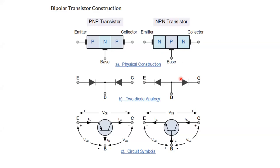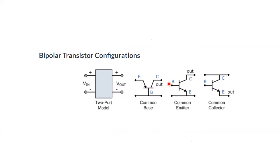Depending on the configuration, we can have different modes of operation, and within each mode there are different operating regions. There are also several ways to use this device in circuits. Today we will discuss the input and output characteristics of three modes. In V-Lab, only common base and common emitter are available, and in Multisim — if time permits — we will simulate all three modes: common base, common emitter, and common collector.